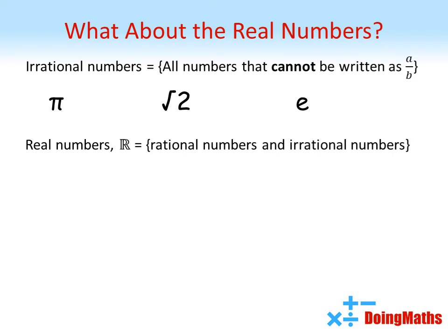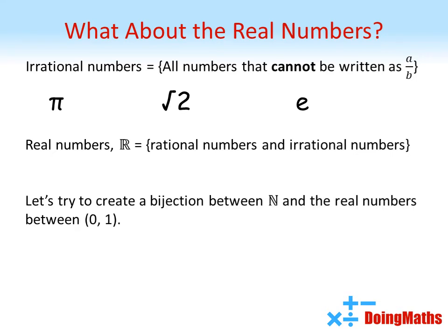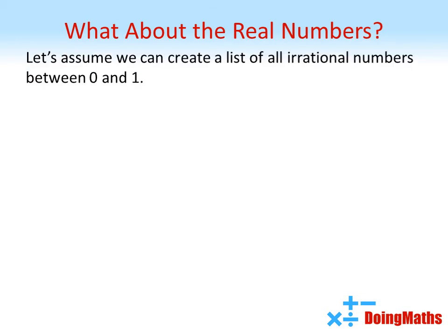Now to work this out, we're going to start by trying to create a bijection between the natural numbers and the real numbers between zero and one. We can start by assuming that we can create a list of all irrational numbers between zero and one. If we can create this list, then a bijection exists with the natural numbers. If not, then no bijection exists.